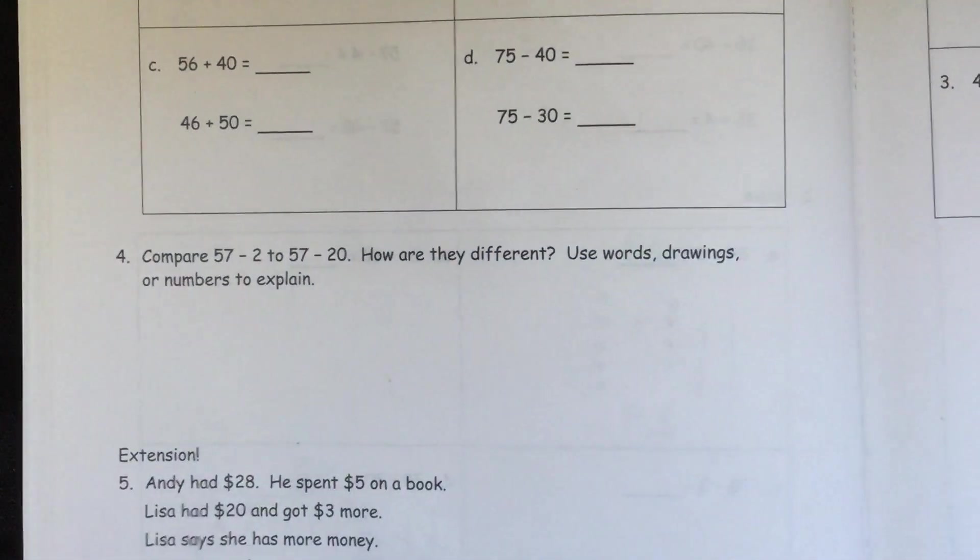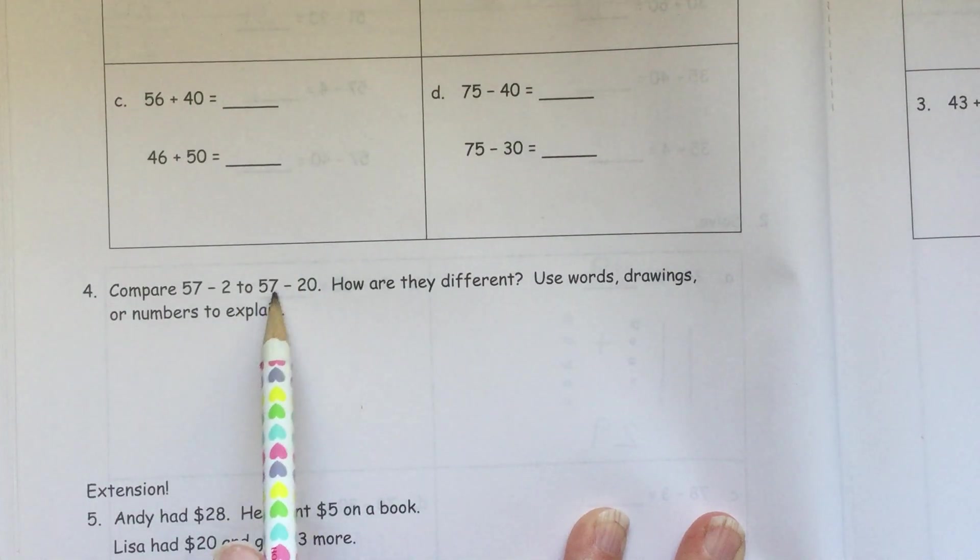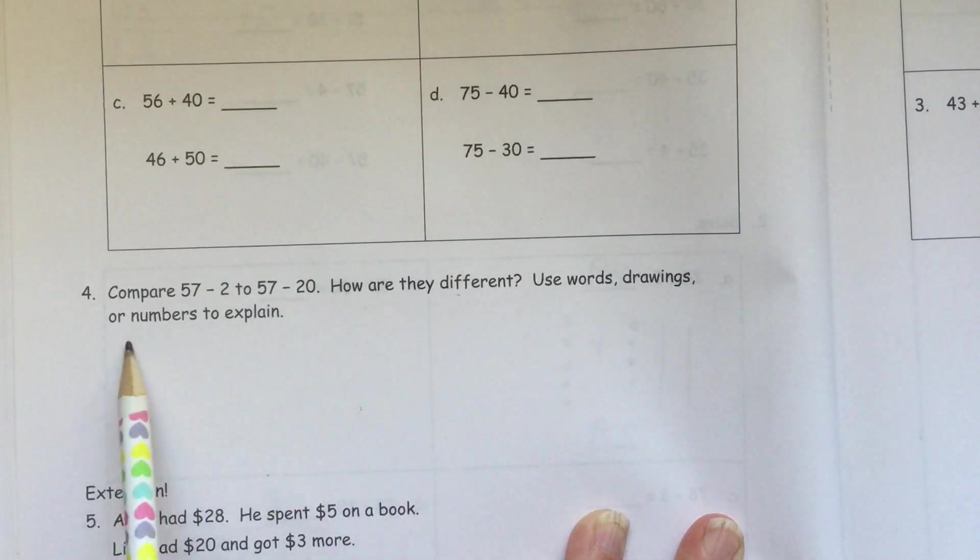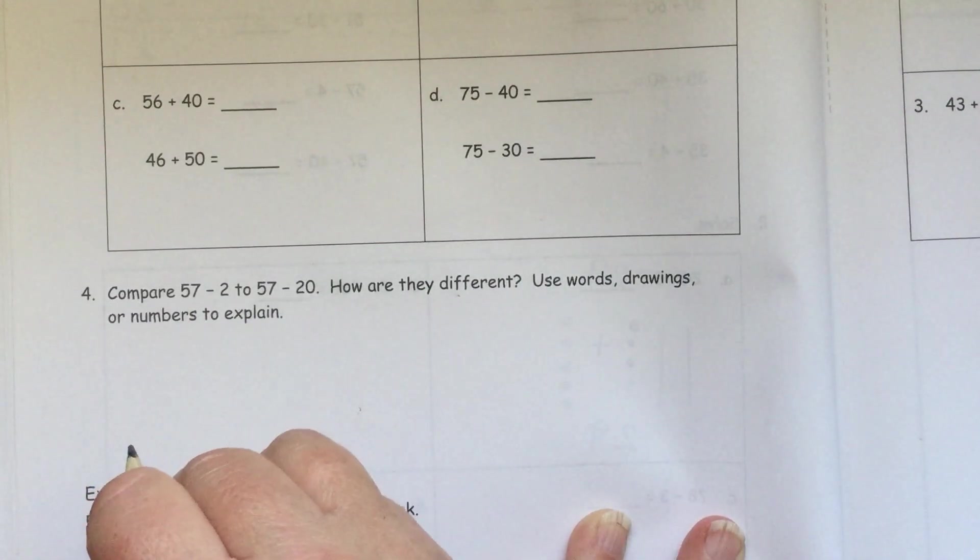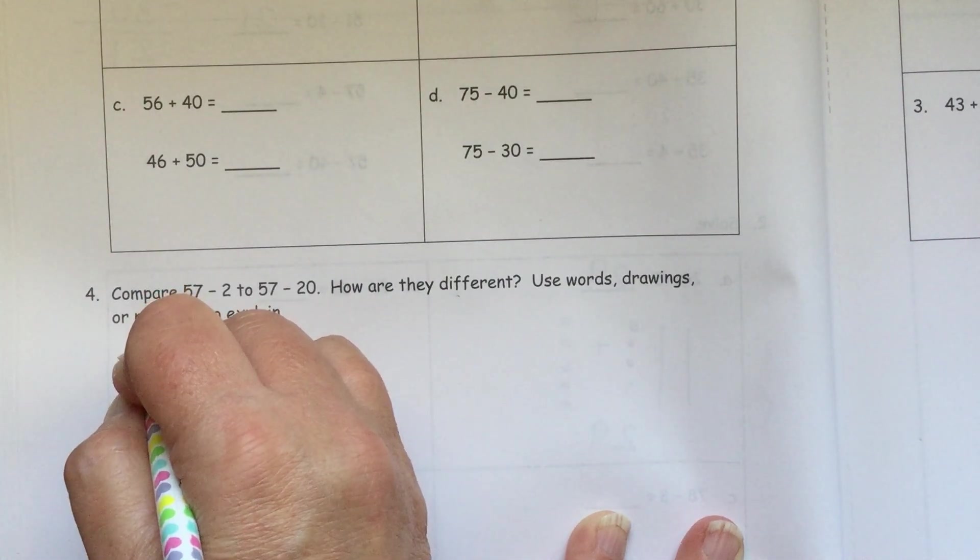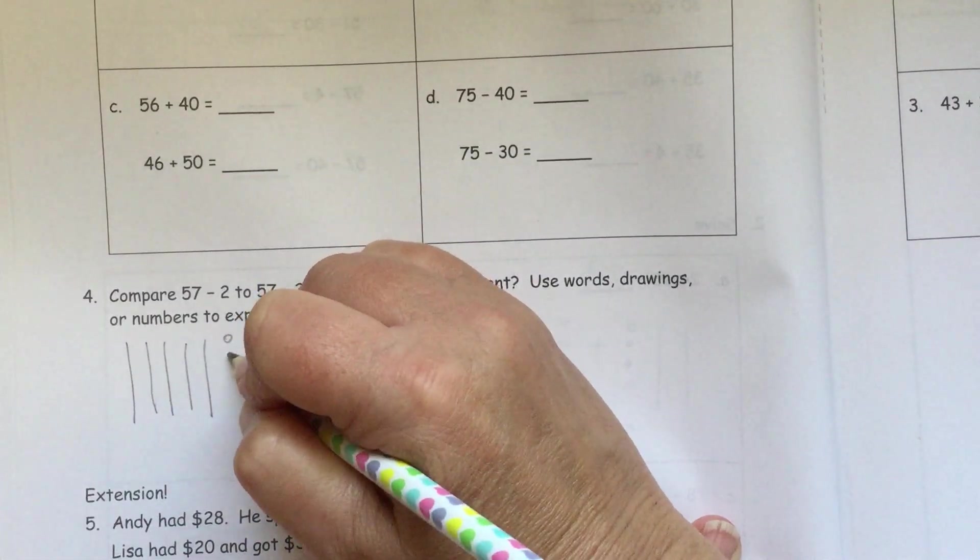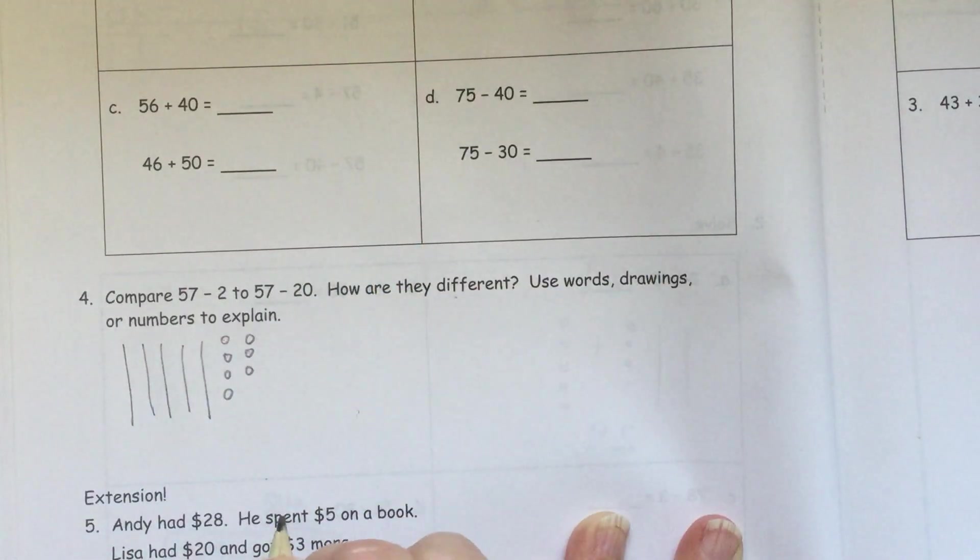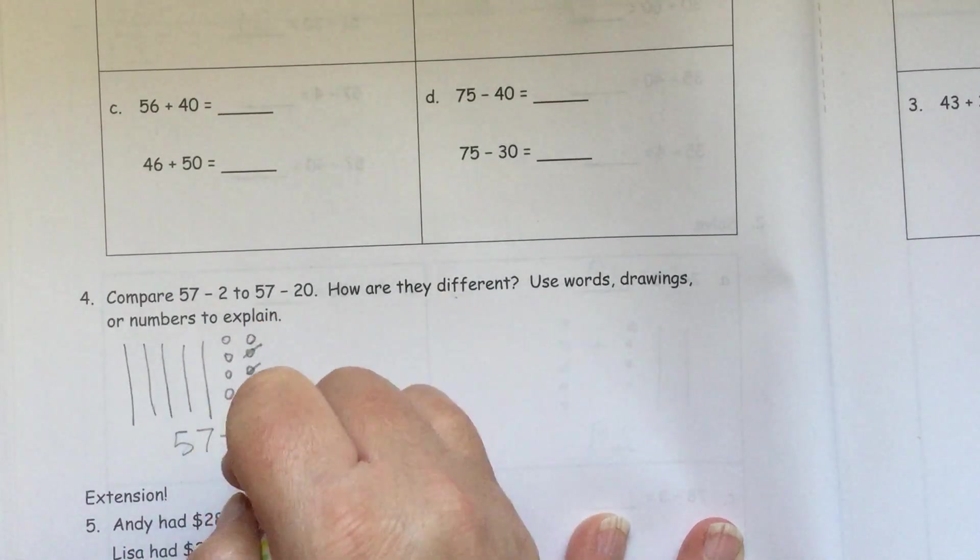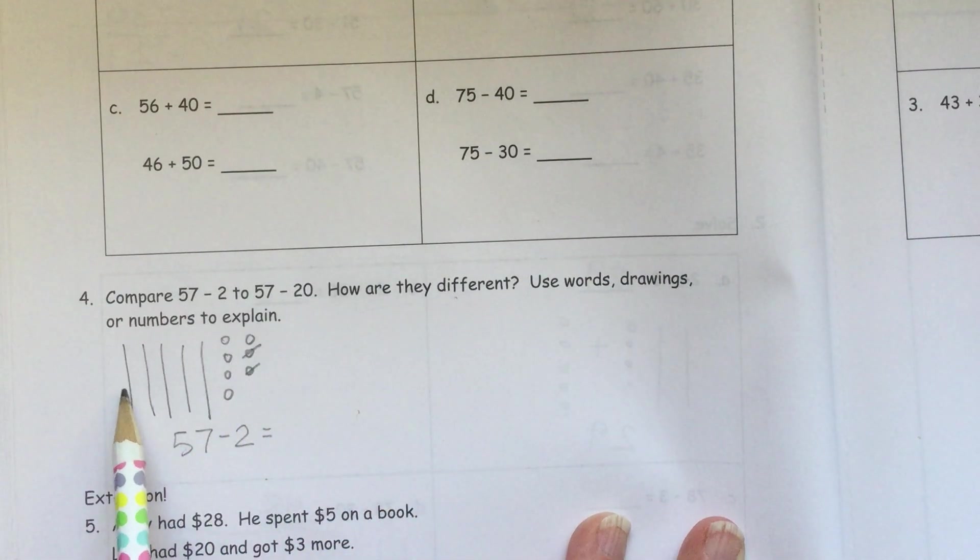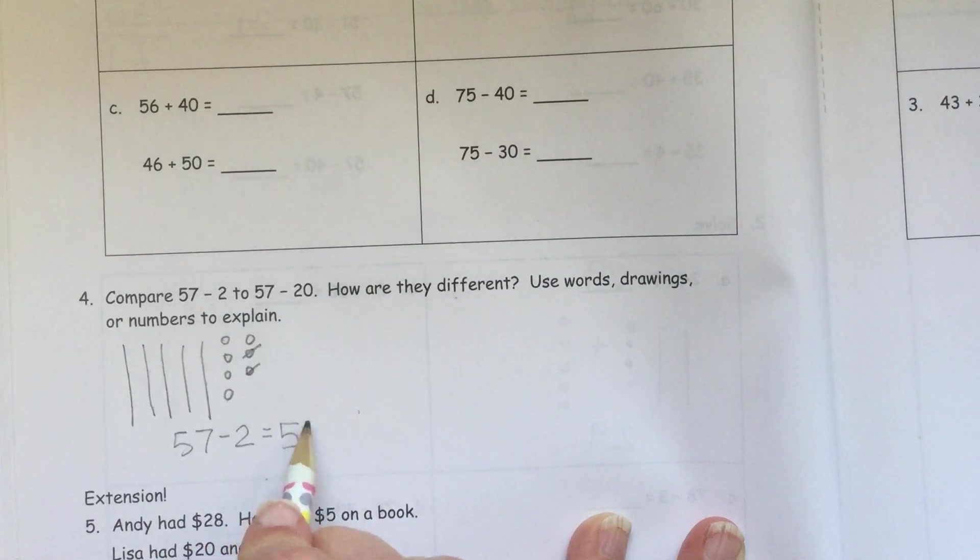On number 4, it says compare 57 minus 2 to 57 minus 20. How are they different? Use words, drawings, or numbers to explain. So if we have 57, they want us to use some drawings. So we could draw our 10s and 1s. So we'll do 57. So we have 10, 20, 30, 40, 50, and 7 1s. So that is 57. And if we subtract, take away 2 and cross off 2. And then we have, we're counting by 10s. 10, 20, 30, 40, 50, 51, 52, 53, 54, 55. So our answer there is 55.